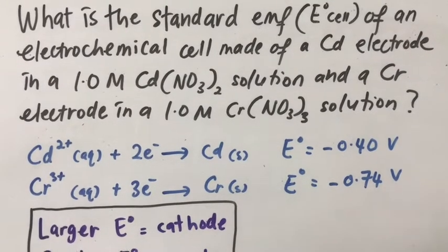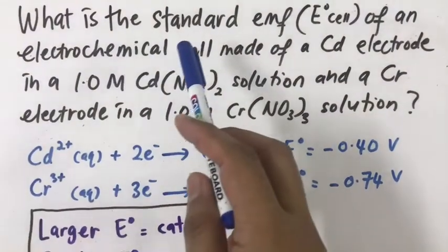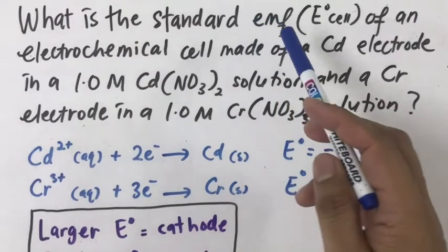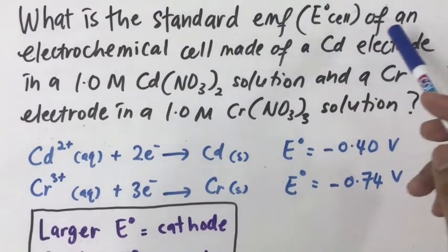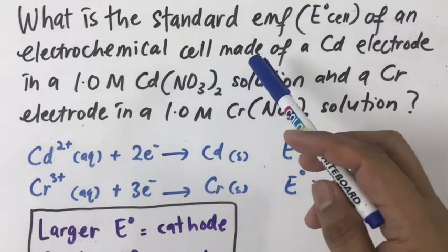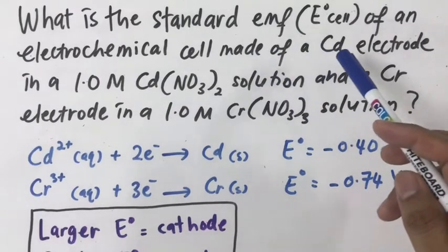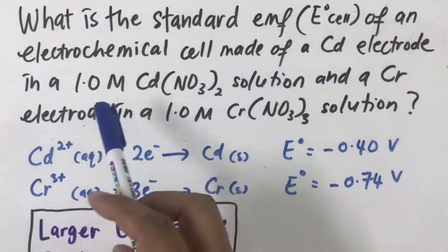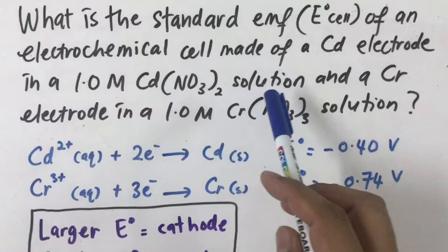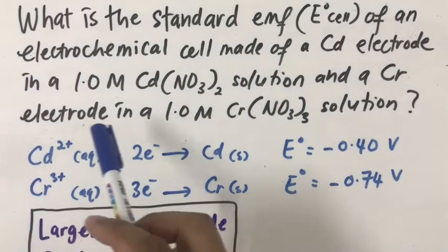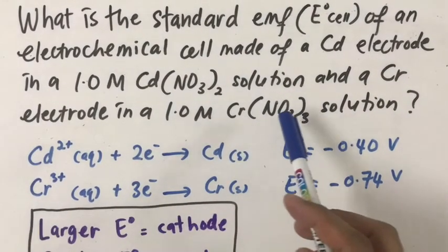This is an example on how to calculate the standard electromotive force, or E° cell, of an electrochemical cell that is made from a cadmium electrode in a 1 molar cadmium nitrate solution and a chromium electrode in a 1 molar chromium nitrate solution.